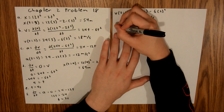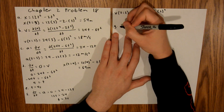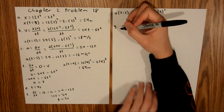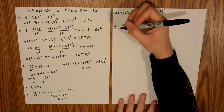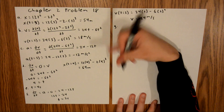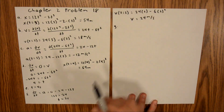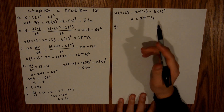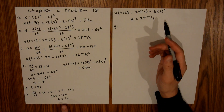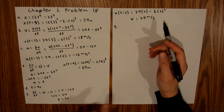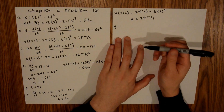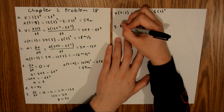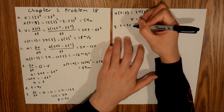For part G, similar to parts D and E, we actually had to find the time in order to solve part F. So the final answer for part G is time equals 2 seconds.